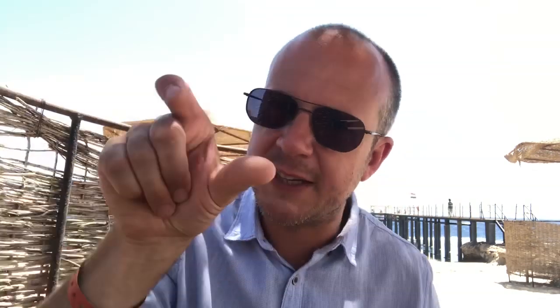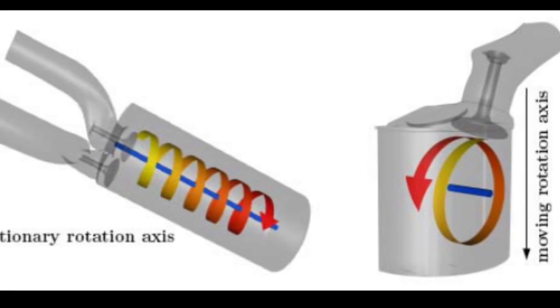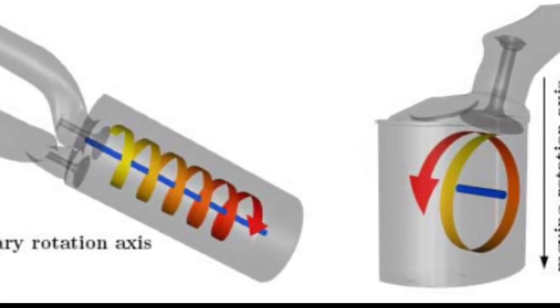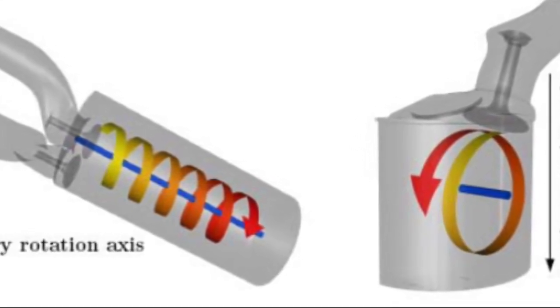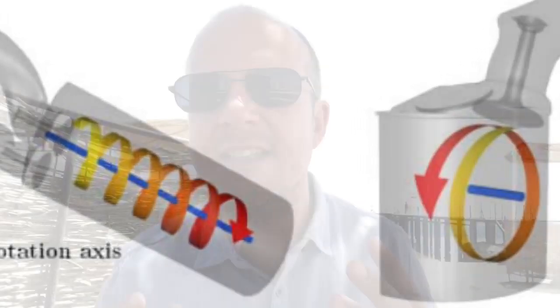With tumble, the axis of mixture is horizontal, and given the cylinder diameter you might only get one or two tumbles. With swirl, the axis of the curve gives you more mixing per cylinder — hence greater mixture of air and fuel, hence greater combustion and better efficiency. That's what it's all about.